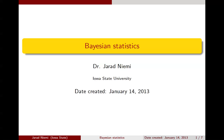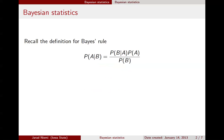If at this point you are unfamiliar with Bayes' rule, I suggest you see either my previous lecture on the topic or review some other resource about Bayes' rule. To quickly recall what Bayes' rule is: Bayes' rule states the probability of A given B is equal to the probability of B given A times the probability of A divided by the probability of B.